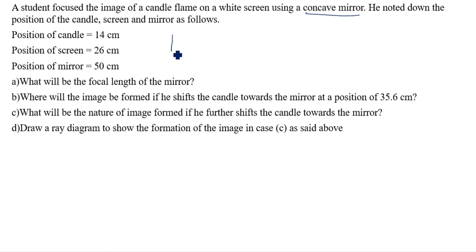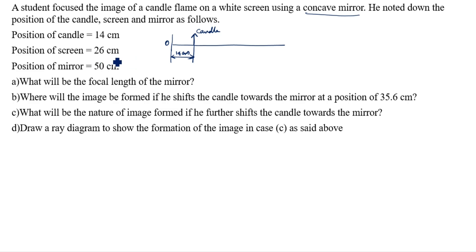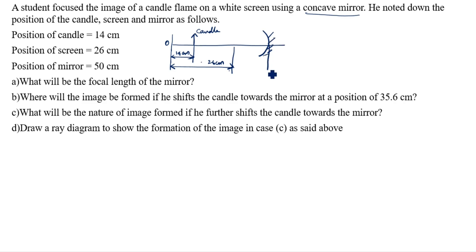First, we take position one. The position of the candle is 14 centimeters, so the candle is here at 14 centimeters from the starting point zero. The position of the screen is 26 centimeters. The screen is where the image forms, and the candle is the object. The position of the mirror is 50 centimeters, and since it is concave, we draw a concave mirror.